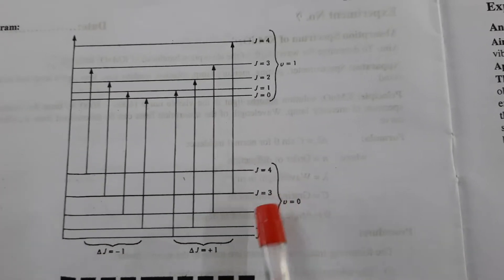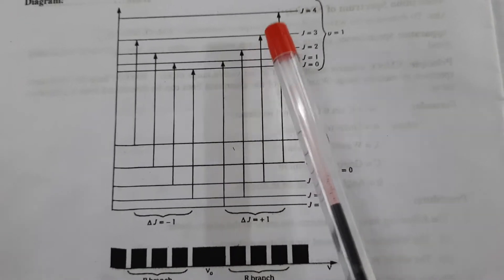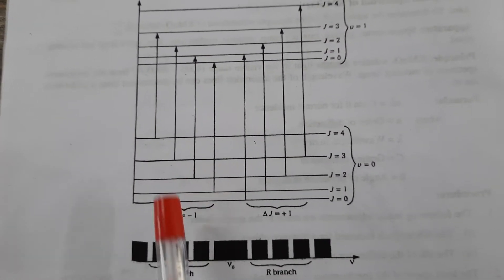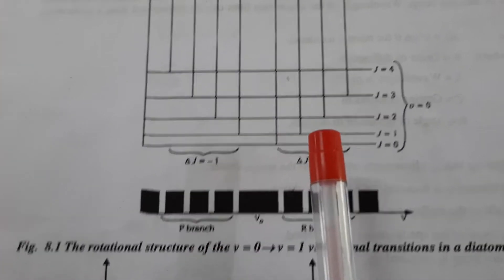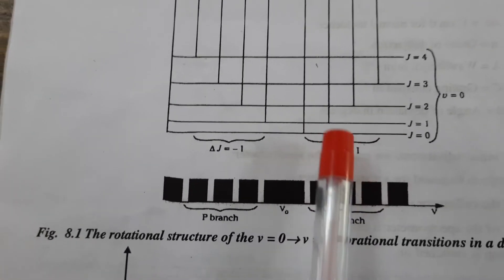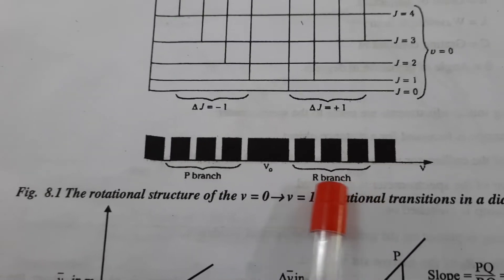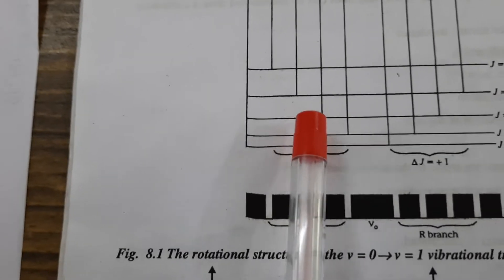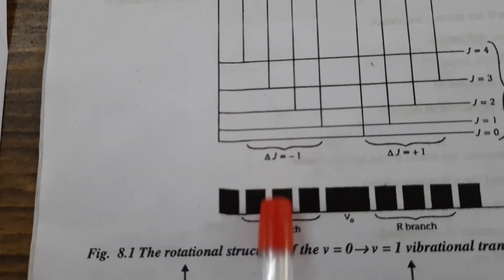Transitions occur from one vibrational state to another and from one rotational energy level to another. These transitions are governed by the selection rule delta J equals plus or minus 1, where delta J equals J final minus J initial. Delta J equals plus 1 gives rise to the R branch, where transitions go from lower to higher rotational energy states. Delta J equals minus 1 gives rise to the P branch.